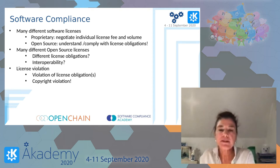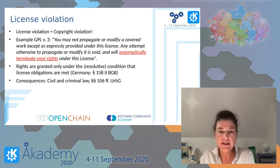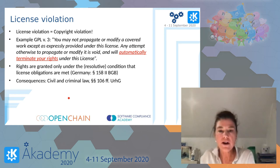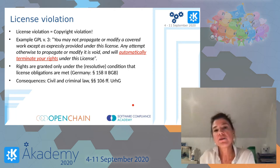What happens if you forget or intentionally neglect some of these license obligations? That means you are not only in breach of the license and the contract — it also means you end up in a copyright violation. This is because most licenses are designed that way. For example, in GPL 3 it explicitly states: you may not propagate or modify a covered work except as expressly provided under this license. Any attempt otherwise to propagate or modify it is void and will automatically terminate your rights under this license.